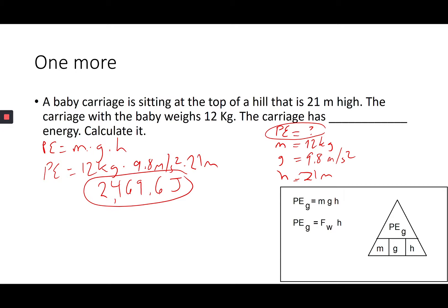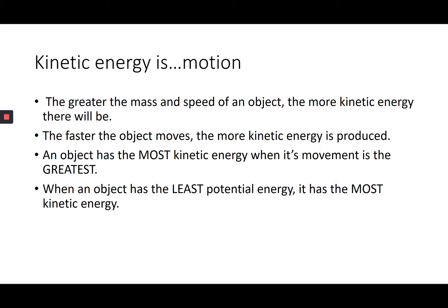Now kinetic energy — a different form of energy, which is motion. The faster an object moves, the more kinetic energy is produced. An object has the most kinetic energy when its movement is the greatest. Both mass and speed affect kinetic energy. Speed is a vaguer word — velocity is more precise, and speed and velocity mean different things.